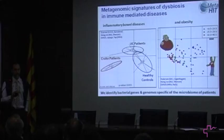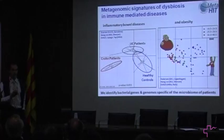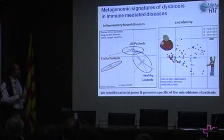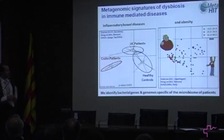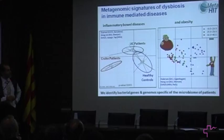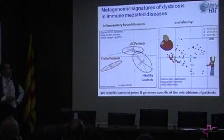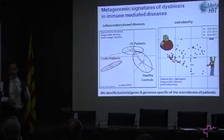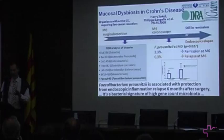Within the European program MetaHIT, we had two main disease conditions as focus of our explorations comparing patients and healthy individuals. One was inflammatory bowel disease, where studies were centered at Vall d'Hebron University Hospital with Francisco Guarner's group. What we saw is that it's quite easy to distinguish in a PCA plot healthy individuals from UC patients and Crohn's disease patients. We also worked on obesity mainly with a group of Oluf Pedersen in Denmark, and we can separate lean subjects, overweight individuals, and obese patients very easily.